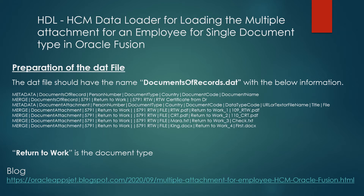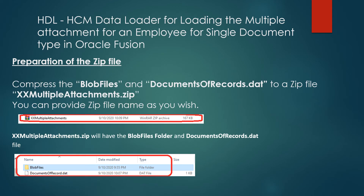Make sure that the title is unique for each record. Now we are good to go with document of records. If you want to have this sample data of the dat file, you can refer to my blog. Now let's do the preparation of the zip file. You just need to compress the BIP folder and the document of records dat file into a zip file. The zip file name can be any name you wish, but always make sure the BIP folder name should be the same and the document of records dat file name should also remain the same.